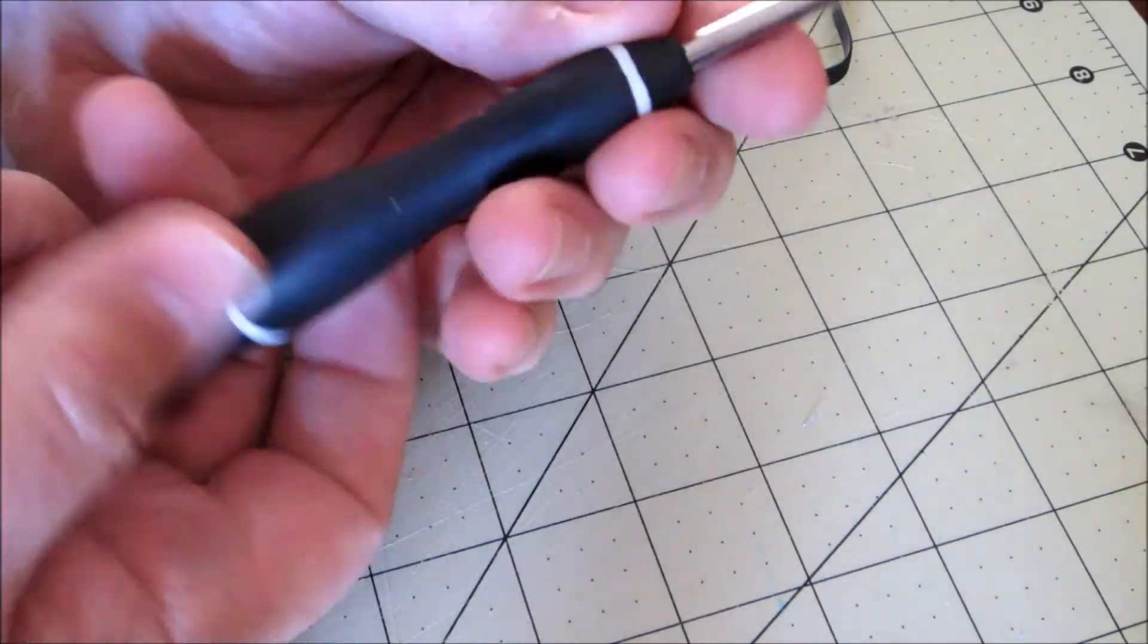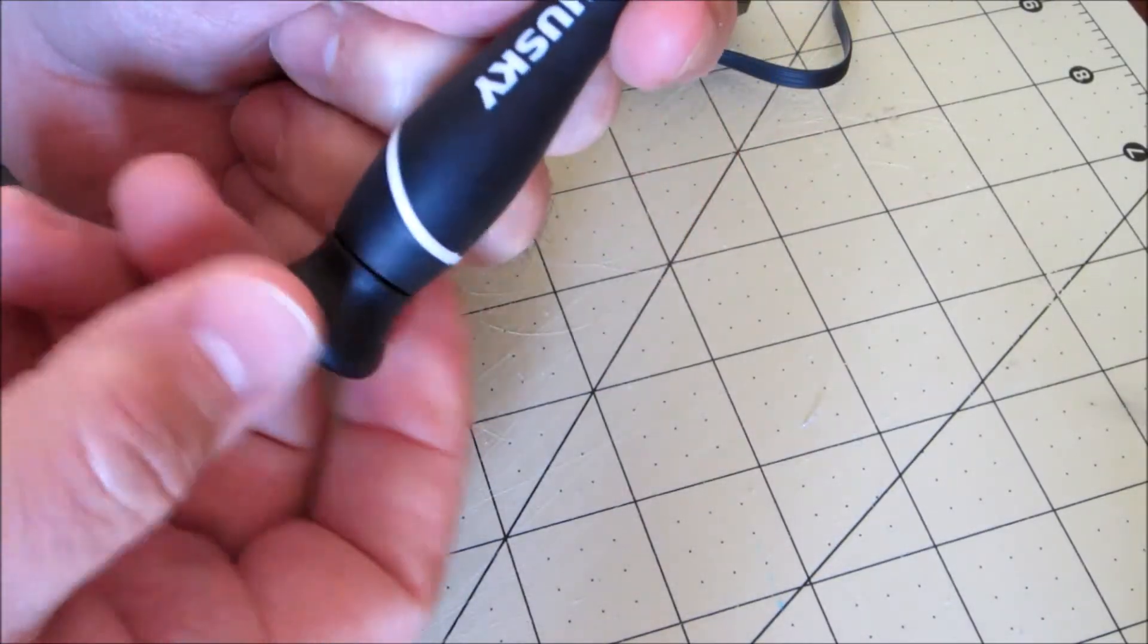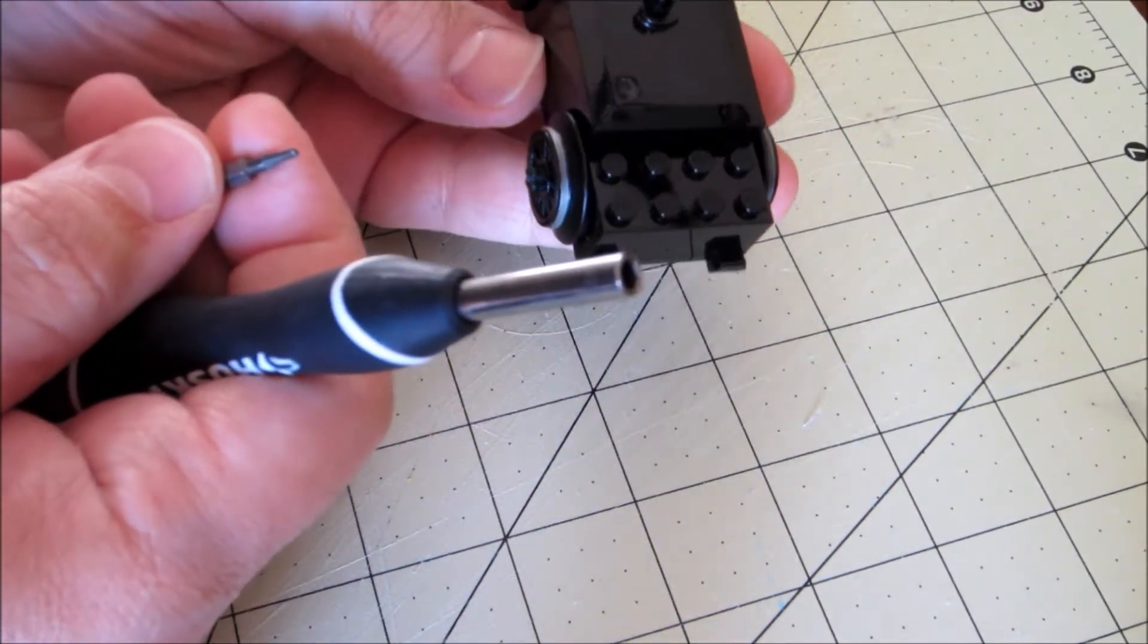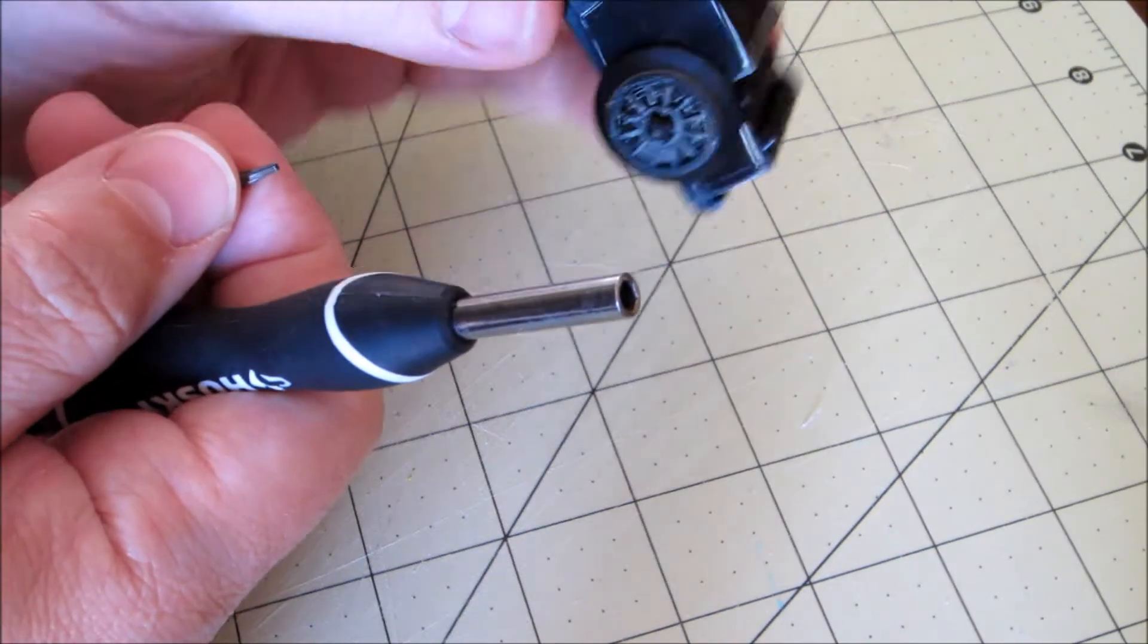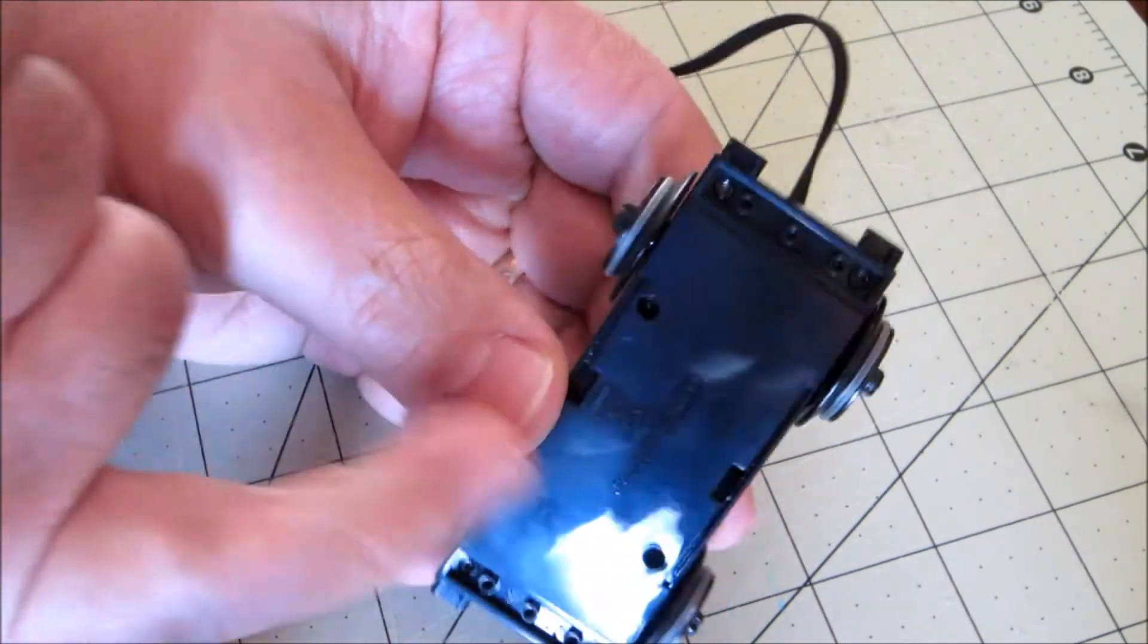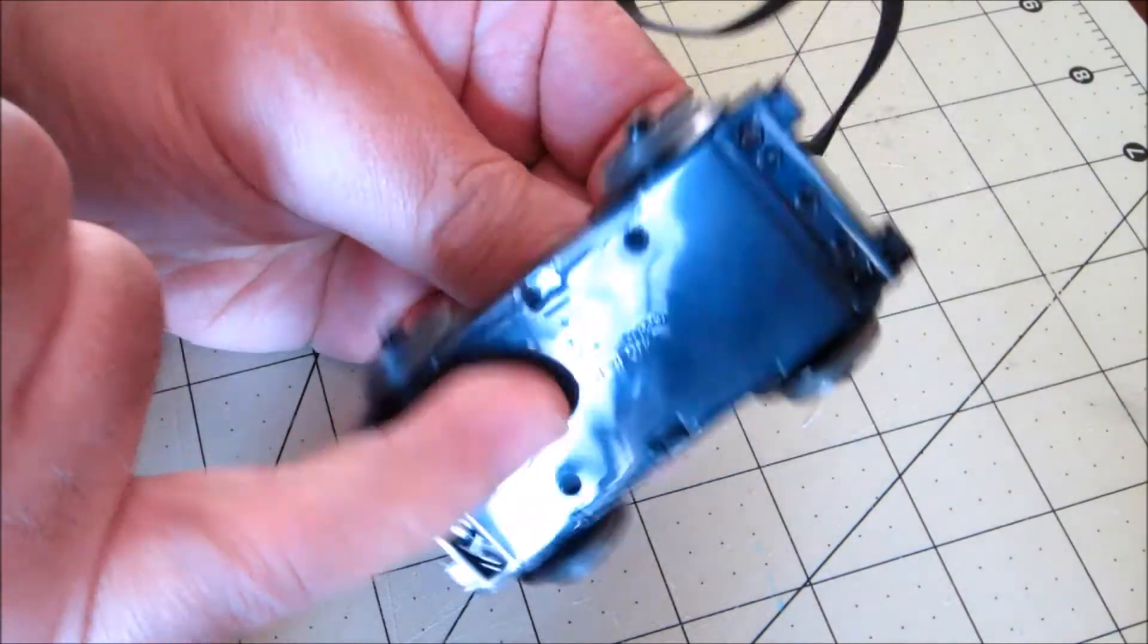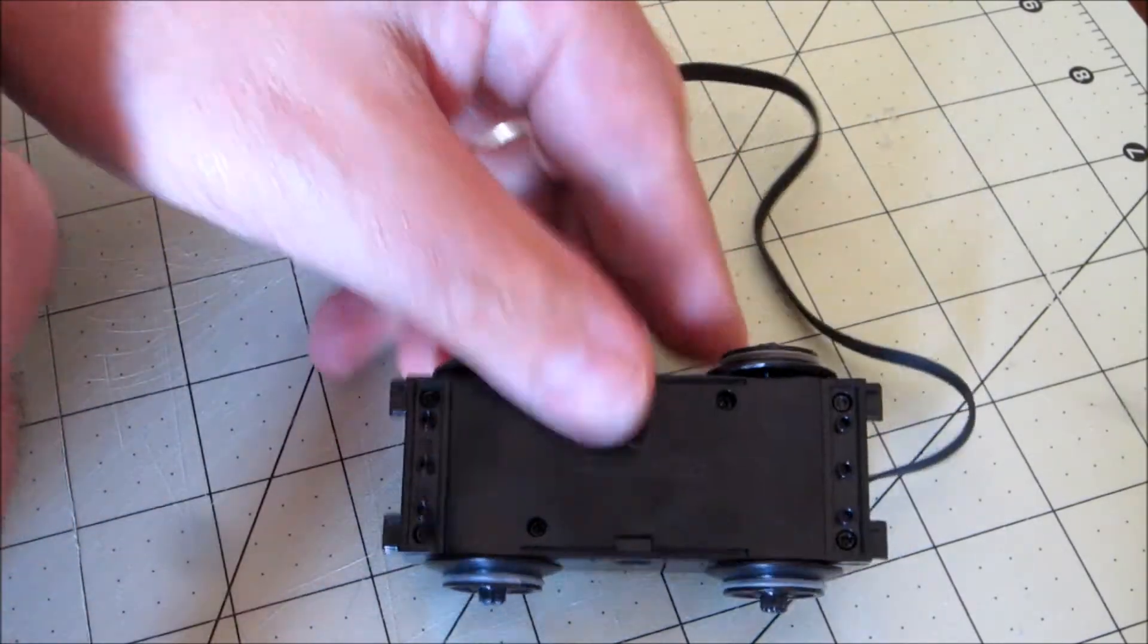Due to several requests on the LEGO Train Group that I'm an admin on, after I showed the results of reversing the polarity on a Power Functions motor by simply changing the wires inside the motor, some people asked me to do a video on that. So here it is.